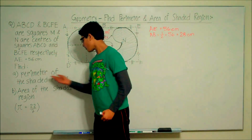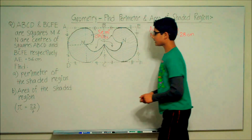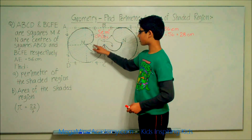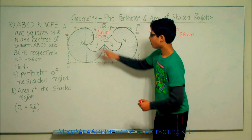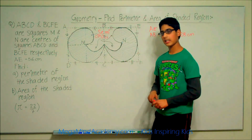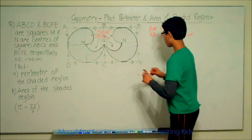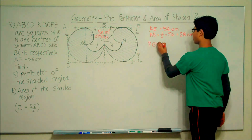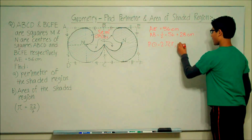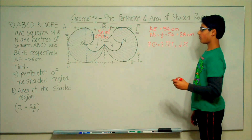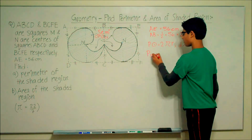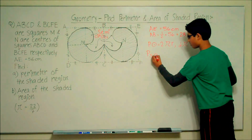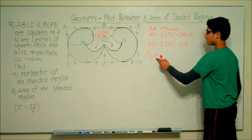Now we need to find the perimeter of the shaded region. We can see that here we have a semicircle, and we also have another semicircle. When we put these two semicircles together, we get a full circle. The perimeter of a circle is equal to 2πr, or diameter times pi. Let's find the perimeter of the small circle — P for perimeter, S for small.